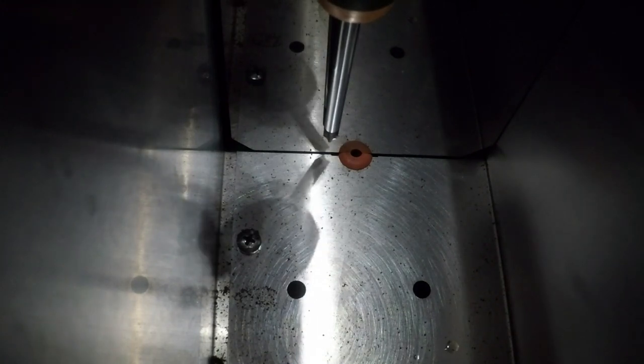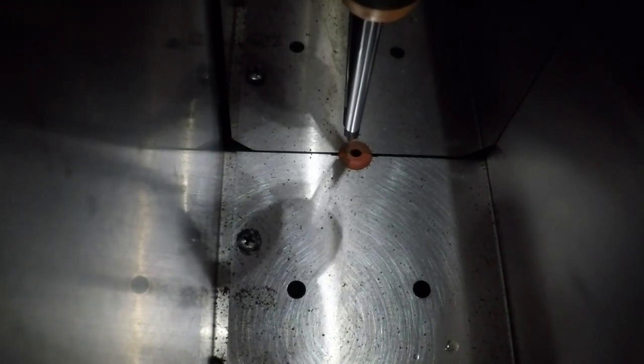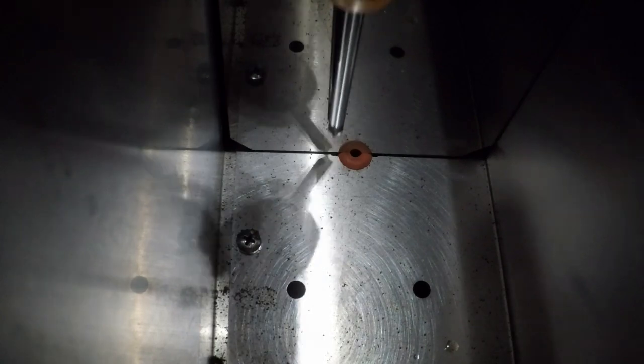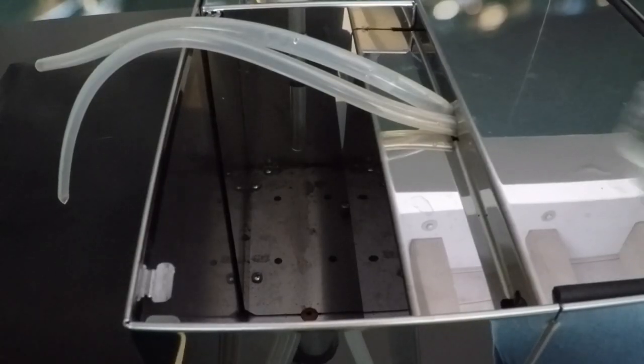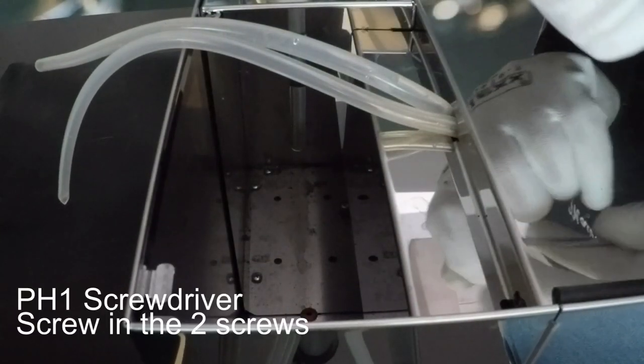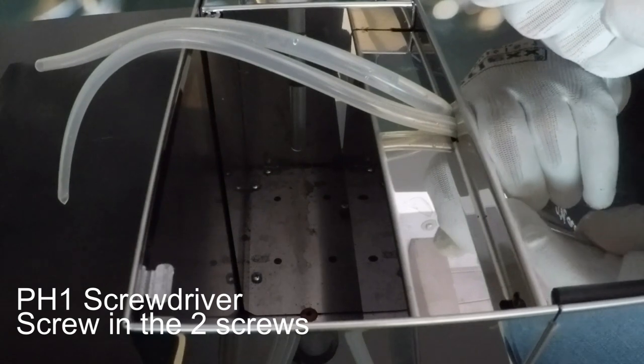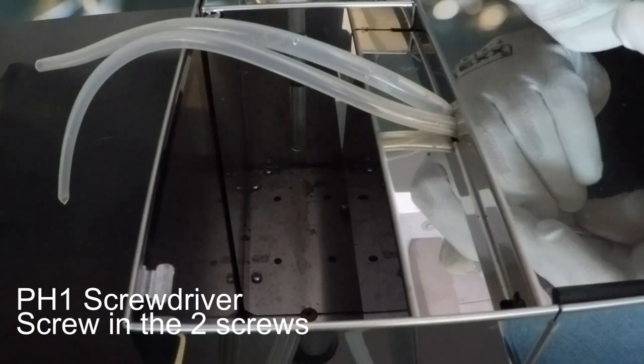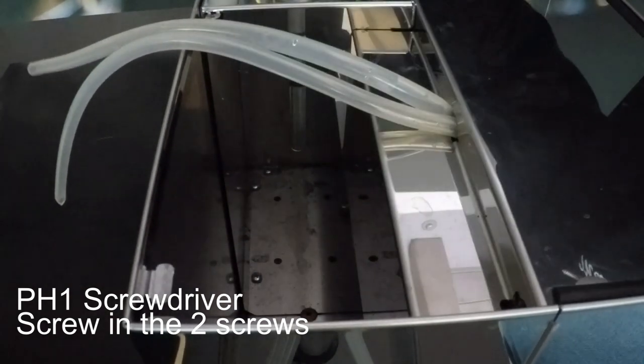Take care to insert the upper bodywork in the red rubber. Use the screwdriver PH1 to screw the two screws on the top of the machine, one screw here and one screw here.